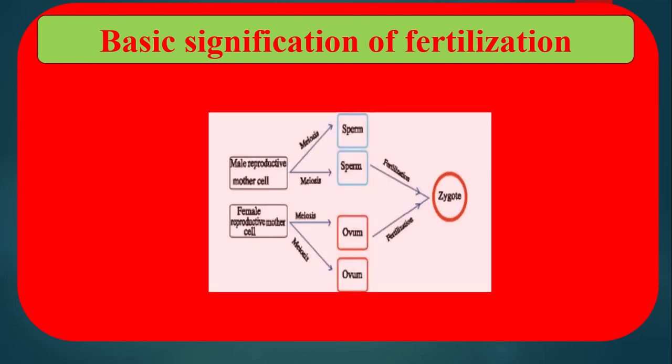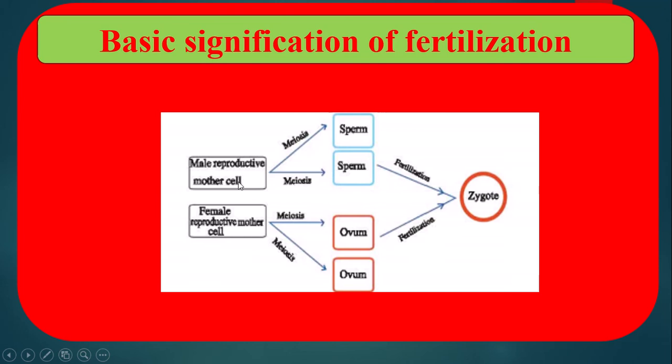Basic significance of fertilization. Fertilization is one of the main phenomena to complete sexual reproduction in animals. Chromosomes carry the characteristics of both father and mother, and these characteristics combine, determining the sex of the embryo. The picture shows the steps of gamete formation. From the male reproductive cell, sperm are produced by meiosis cell division.